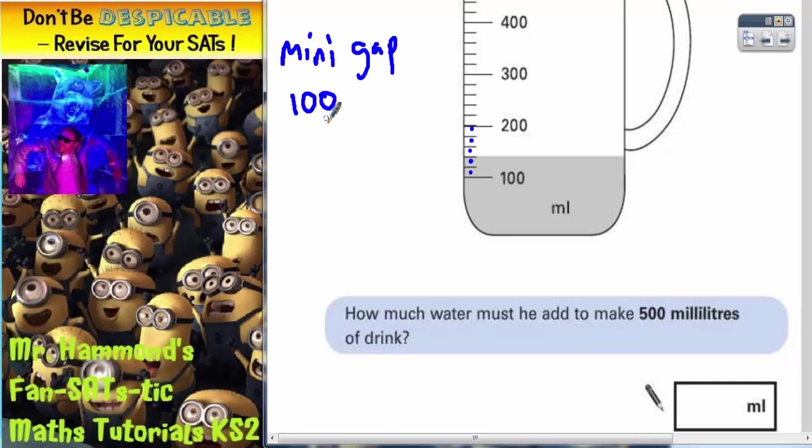So if we split 100 into five mini gaps, it will tell us what each mini gap is worth. Well, 100 divided by five is 20. So each mini gap must be 20 millilitres.